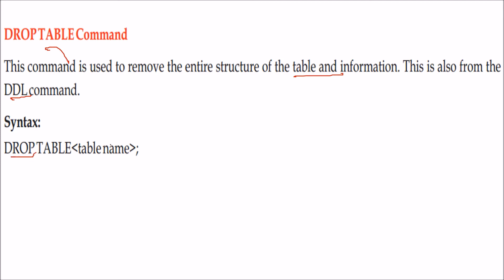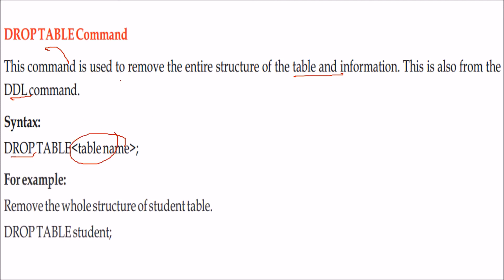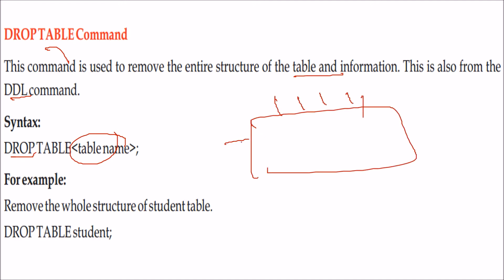The syntax is: DROP TABLE table_name, and that table will be dropped. For example, if you want to remove a student table that contains say seven columns and six records, you just have to say DROP TABLE student, and it will be deleted or dropped.